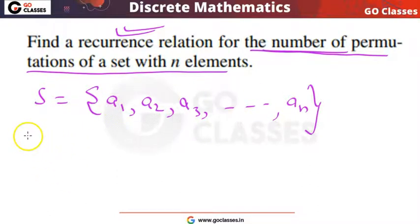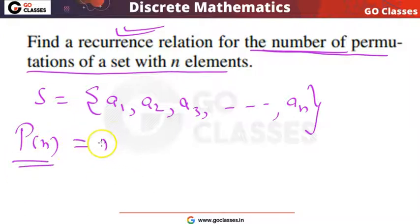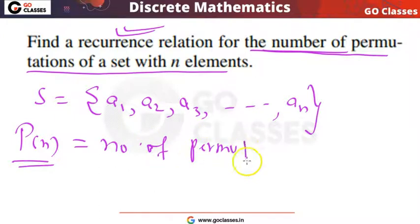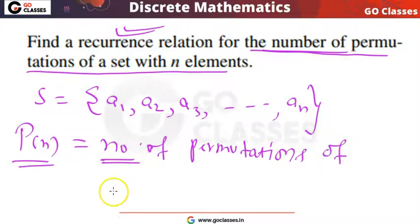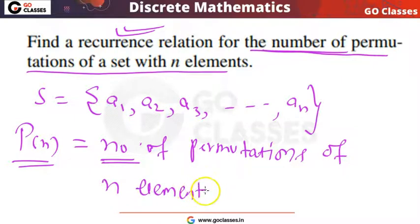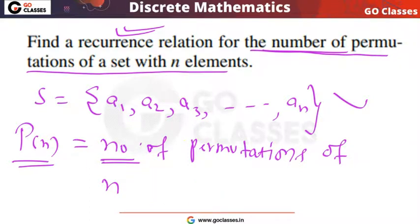Let's call it Pn. Pn means the number of permutations of n elements — the number of permutations of these n elements.